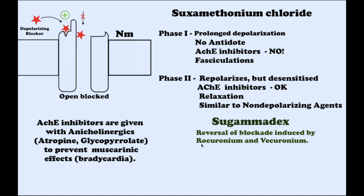The action of all non-depolarizing blockers is readily reversed by increasing the concentration of normal transmitter at the receptors. This is best accomplished by administration of cholinesterase inhibitors such as neostigmine or pyridostigmine — a very important point. In contrast, the paralysis produced by the depolarizing blocker succinylcholine is increased by cholinesterase inhibitors during phase 1. During phase 2, the block produced by succinylcholine is usually reversed by cholinesterase inhibitors.